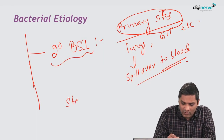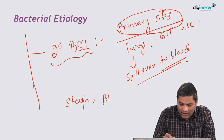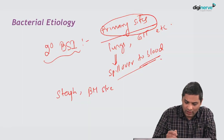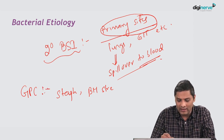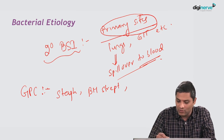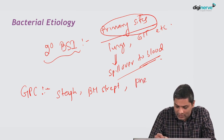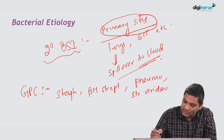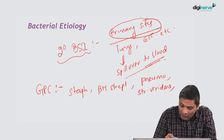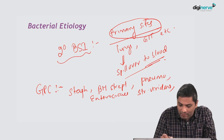Various organisms can invade the bloodstream in secondary infections. The gram-positive organisms causing secondary bloodstream infection include Staphylococcus aureus, beta-hemolytic Streptococcus, Pneumococcus, Streptococcus viridans, and Enterococcus — all gram-positive cocci that can invade the bloodstream.